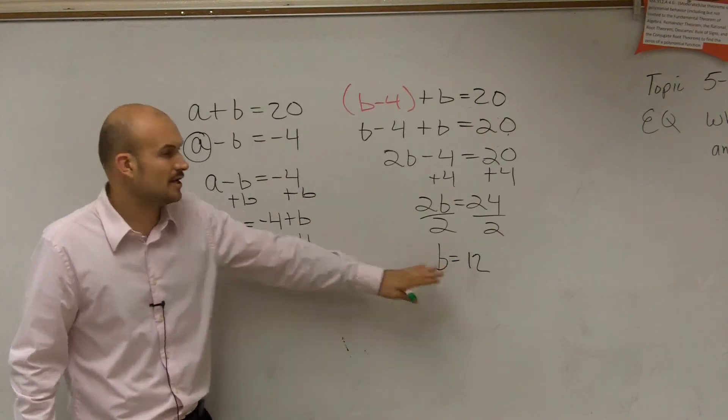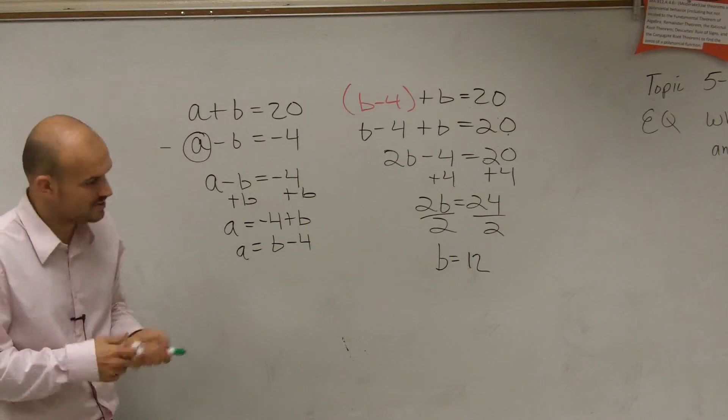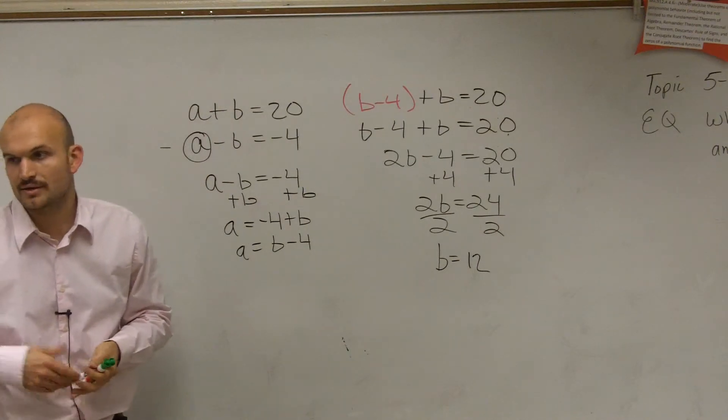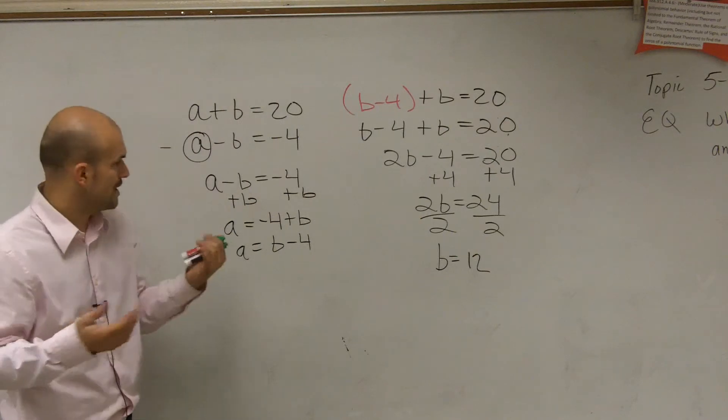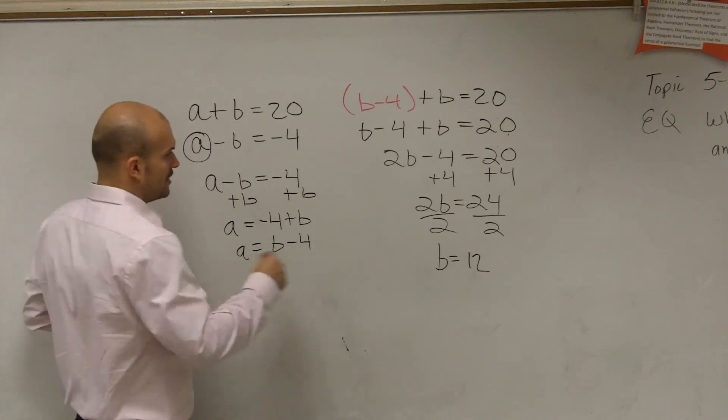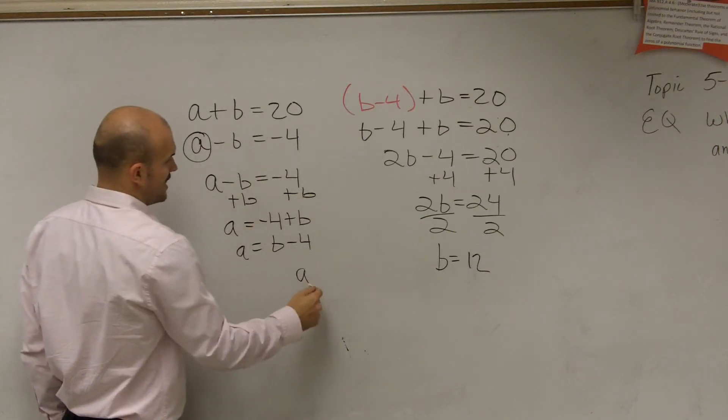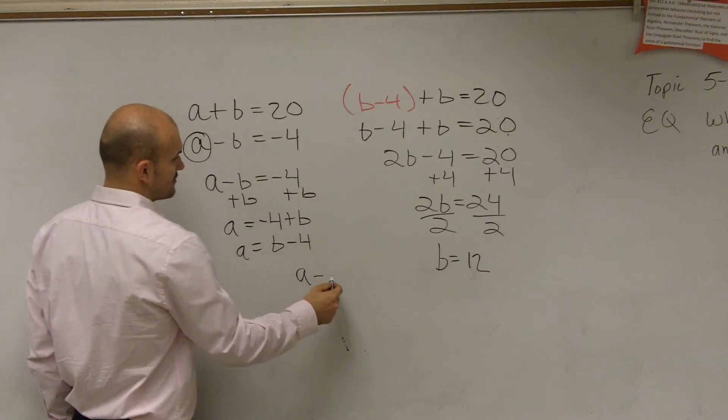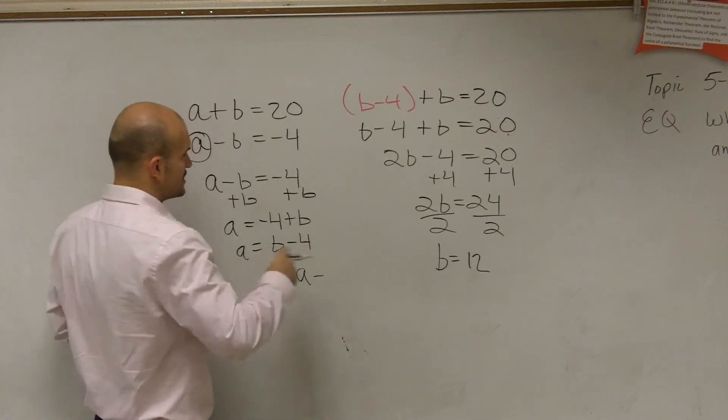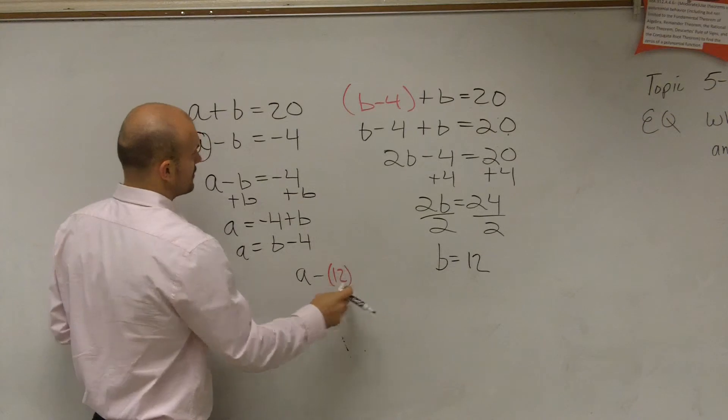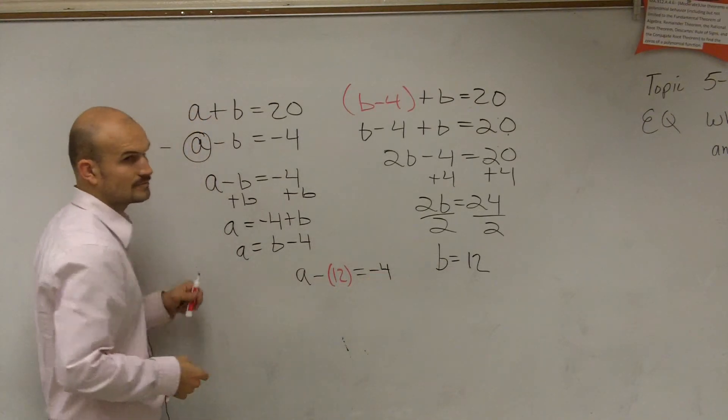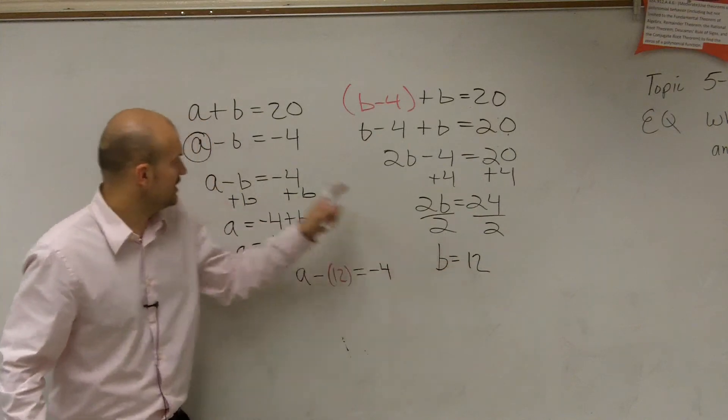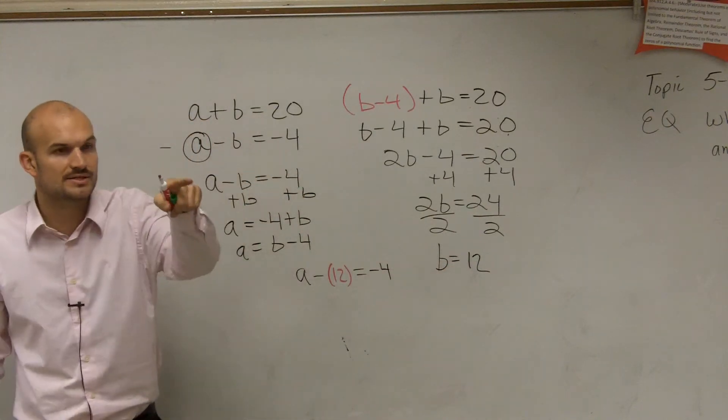So to do that, I need to plug in the value of b into one of these equations. It doesn't matter which one you want to pick. Which one do you want to pick, Vincent? The bottom. The bottom. The bottom. Okay. So therefore, and b now equals a minus 12, because you're going to substitute in the value of b, equals negative 4. So you plug in the value of b in for b into one of those equations. Yes?